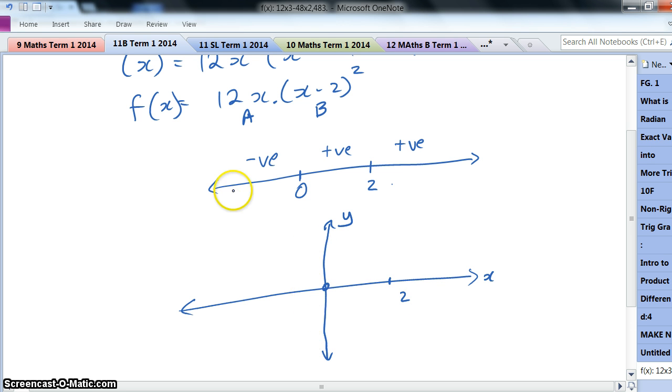It's a cubic, so using your sine diagram, or again, just looking at the expression, when I'm to the left of the origin, I'm negative before I hit that first intercept at 0.